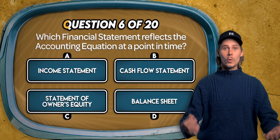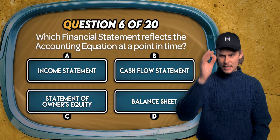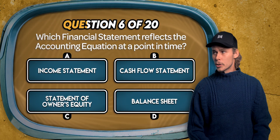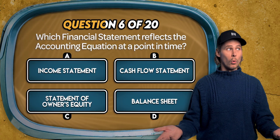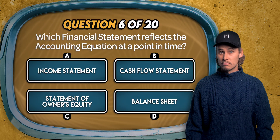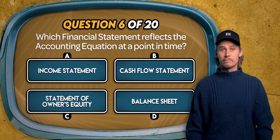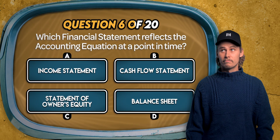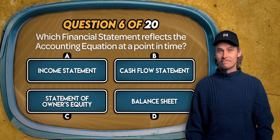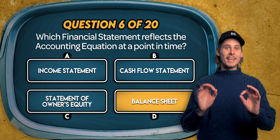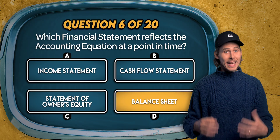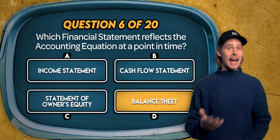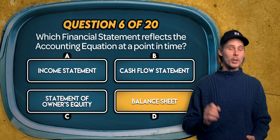Question 6. Which financial statement reflects the accounting equation at a point in time? Could it be the income statement, the cash flow statement, the statement of owner's equity, or the balance sheet? The answer is D: the balance sheet is structured directly on the accounting equation. It gives a snapshot of a business's assets, liabilities, and equity at a specific point in time.